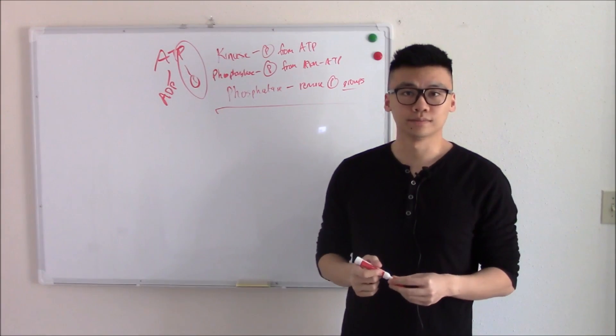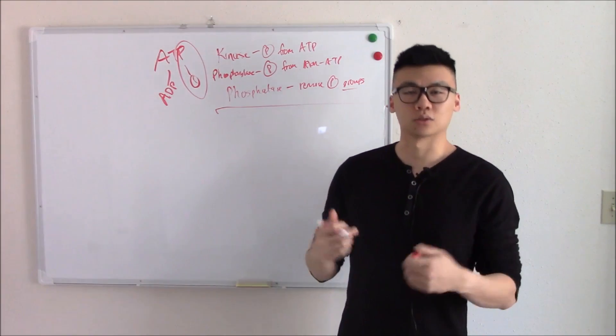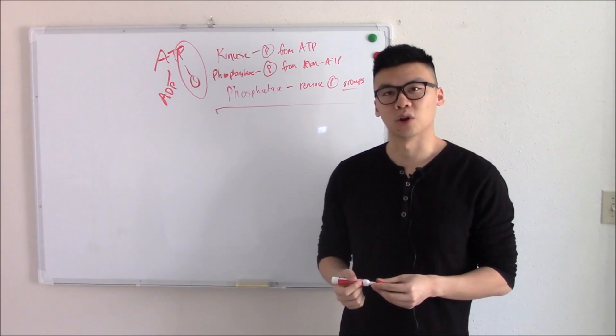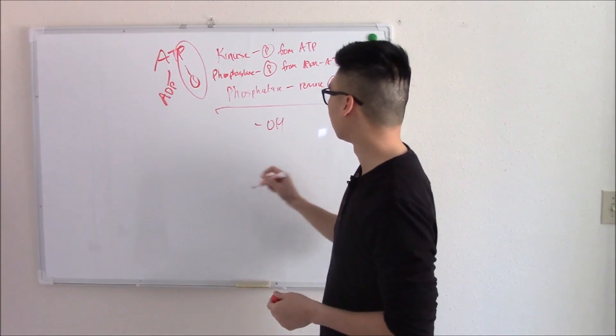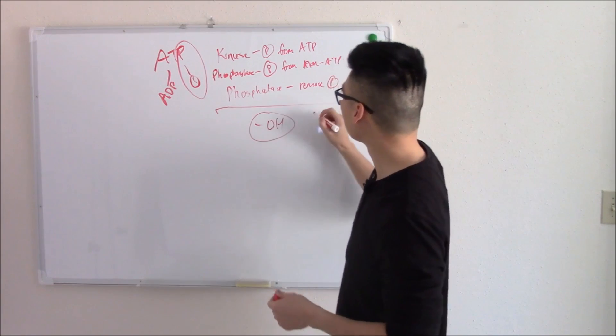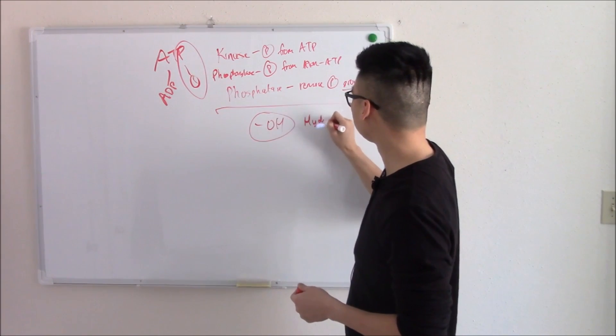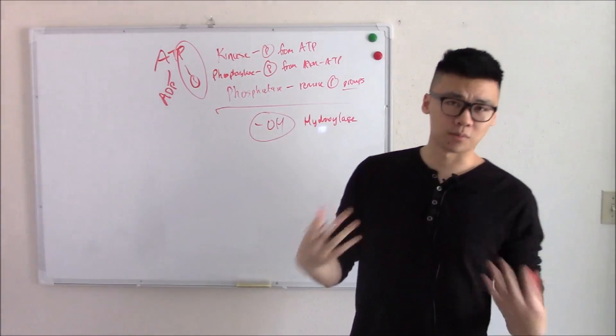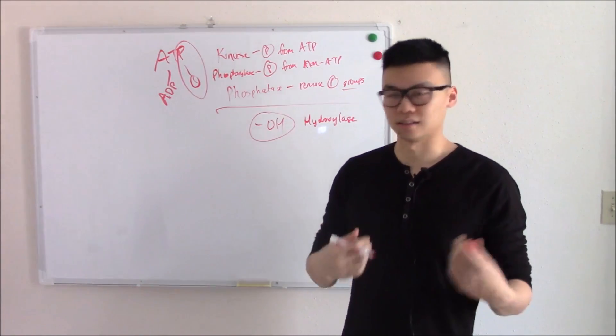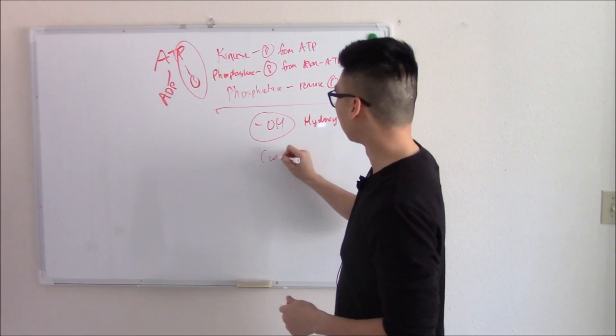Now phosphate isn't the only functional group. You can have things like hydroxyl groups. That's a throwback from your organic chemistry, what's hydroxyl? If you said OH, you're right. So things that move hydroxyl groups are going to be your hydroxylases. You can have things that move carboxyl groups, those are your carboxylases. Makes perfect sense.